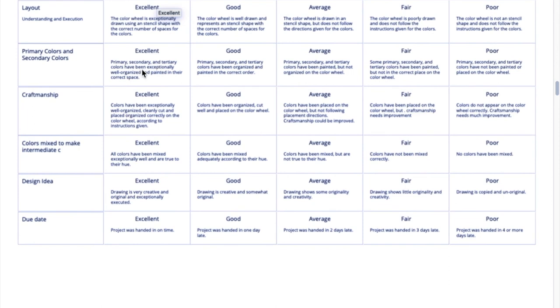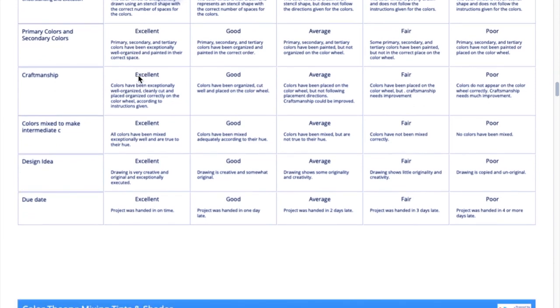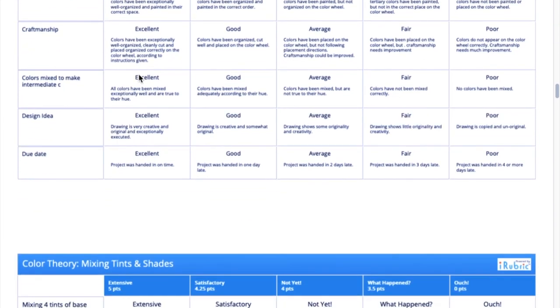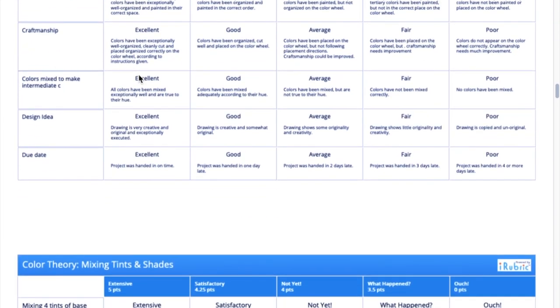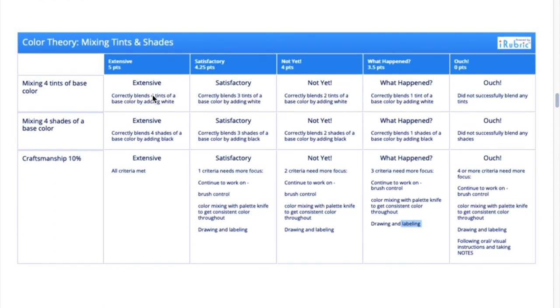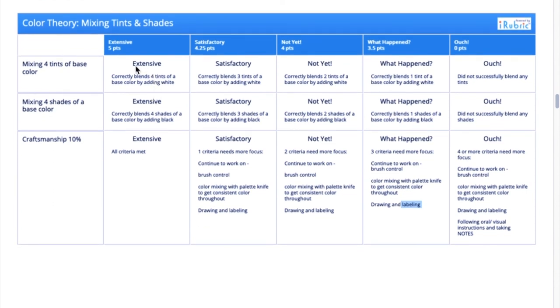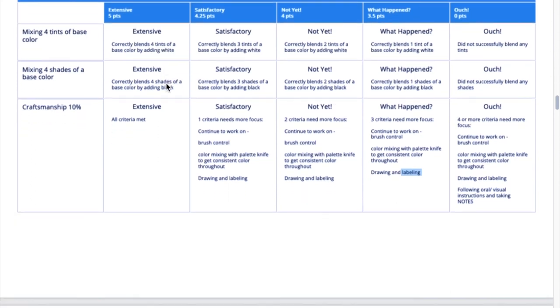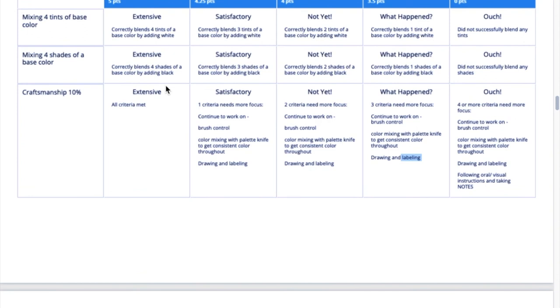Your primary, secondary, and all your colors are organized and painted in that correct space. All colors have been mixed exceptionally well and are true to their hue. And please, just make it look like the pictures I sent you. Mixing tints and shades. It correctly blends tints of base color by adding white. That is what I want to see. Correctly blends shades of a base color by adding black. Excellent.